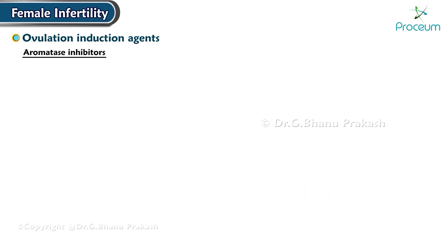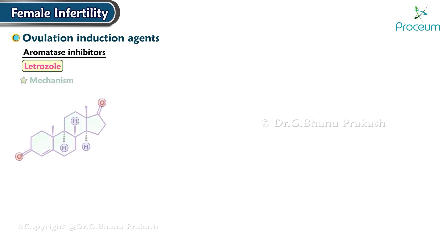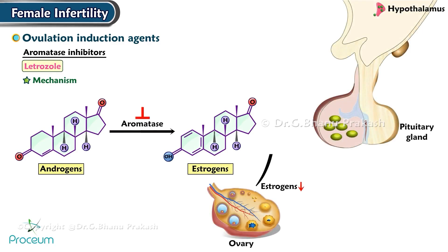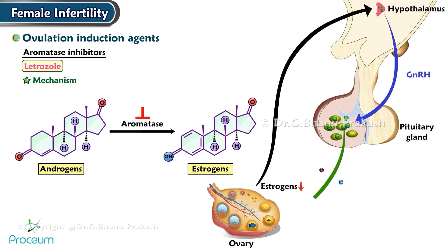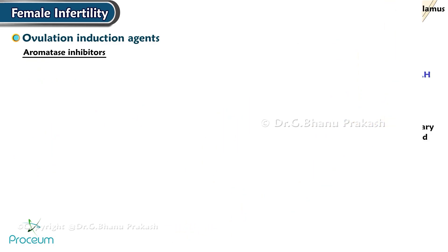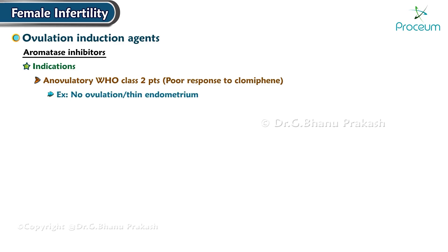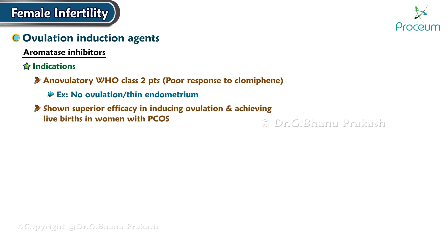Next are aromatase inhibitors — for example, letrozole. Mechanism: Aromatase inhibitors block the enzyme aromatase, which converts androgens to estrogens. Reduction in estrogen levels stimulates the hypothalamic-pituitary axis to increase the production of gonadotropins, leading to follicular development and ovulation. Indications: Aromatase inhibitors are used for anovulatory WHO Class II patients, especially those with a poor response to clomiphene — for example, those with no ovulation or thin endometrium. Letrozole has shown superior efficacy in inducing ovulation and achieving live births in those with polycystic ovarian syndrome.